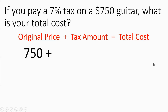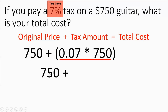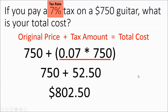You take your original price and you're going to need to know your tax rate to figure out the tax amount. So we take 7% times $750 — from our earlier lesson, we learned that you do 0.07 times $750. You drop down your original price and you get $52.50 — that is your tax amount. Then you take that and add it to the original cost. This guitar costs $750, but you're going to have to pay $802.50. So that's your total cost.